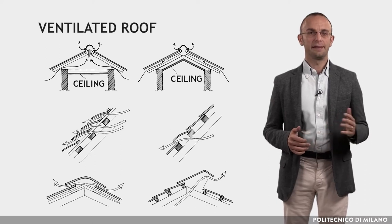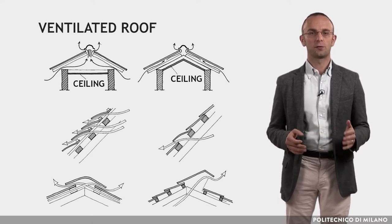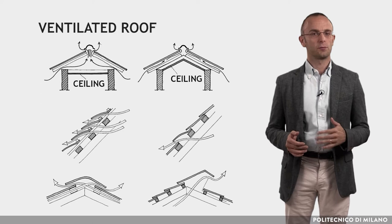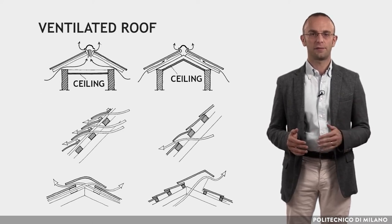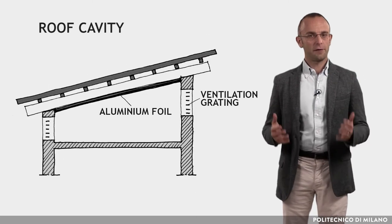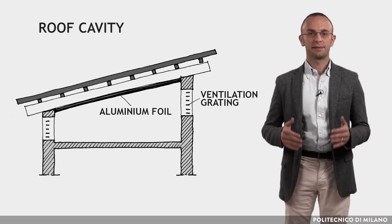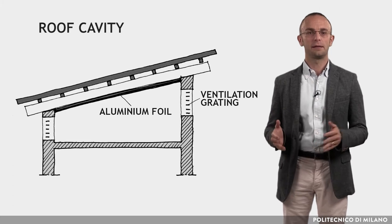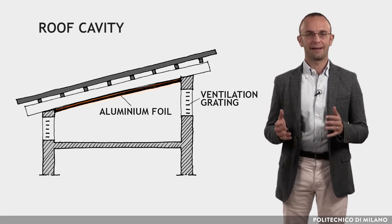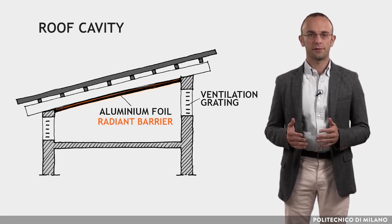In ventilated roofs, like these in the figure, slopes should be oriented towards the prevailing breeze. In both types of ventilated roofs, any element which would interrupt the airflow next to the surface of the roof should be avoided. In the figure, some solutions for roof ventilation are shown. The ventilation outlet can have different designs and should be possibly equipped with grating to protect the cavity. A reflective surface in the cavity is highly recommended since it reduces the radiant heat transfer by reflecting the long-wave radiation emitted by the hot upper layer. This foil, called a radiant barrier, should be applied to the inner surface of the roof.